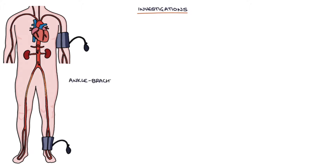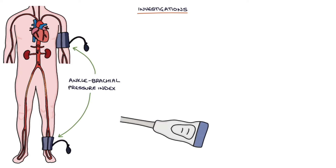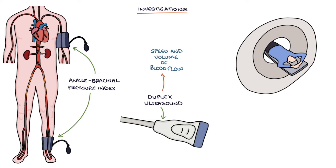Next, let's talk about the investigations for peripheral arterial disease. These include an ankle brachial pressure index (ABPI), duplex ultrasound — which is an ultrasound scan that shows the speed and volume of blood flow — and angiography, which can be a CT or MRI angiogram and involves using contrast to highlight the arterial circulation.